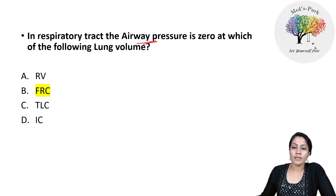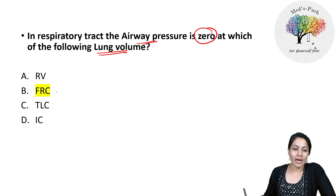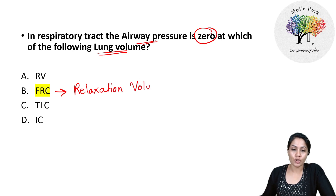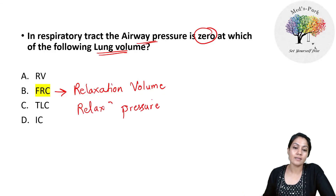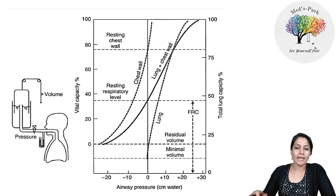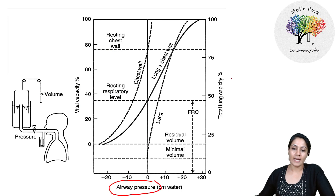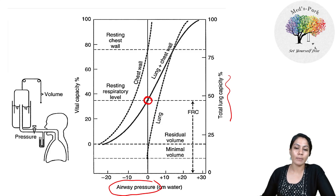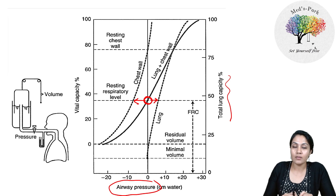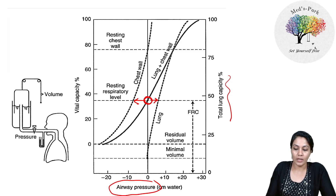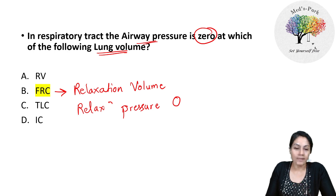In the respiratory tract, airway pressure is zero at which lung volume? FRC is also called relaxation volume, and the corresponding pressure is the relaxation pressure, which is zero. At FRC, the transmural pressures of the lung and chest wall balance each other, and the muscles are completely relaxed. The answer is FRC, not RV, TLC, or RIC.